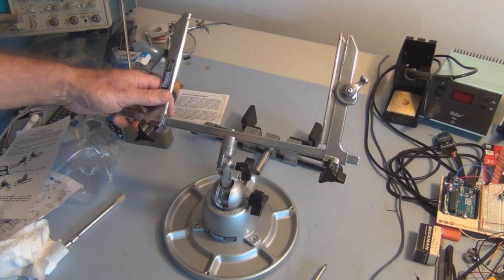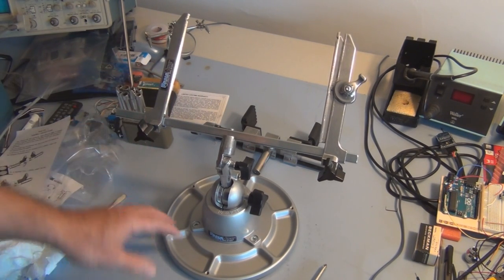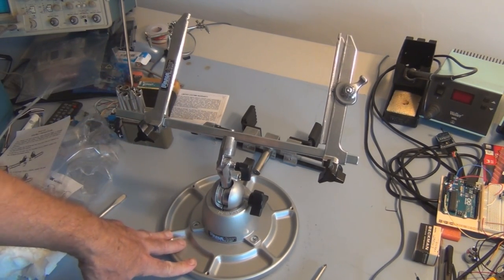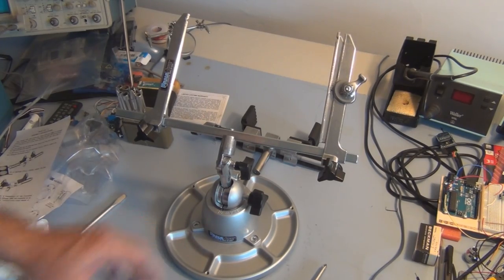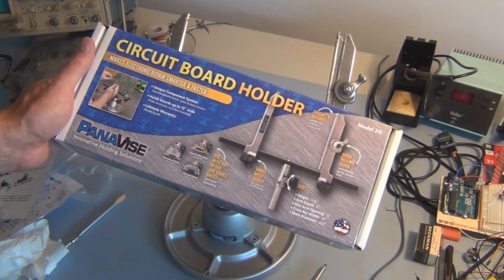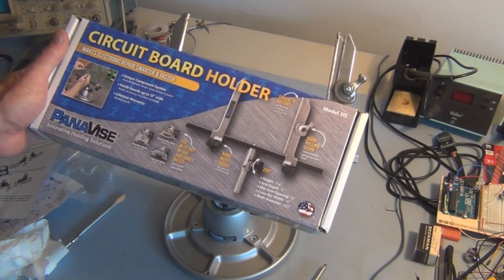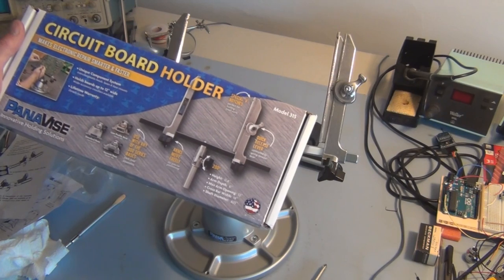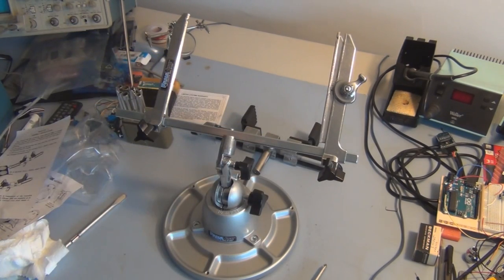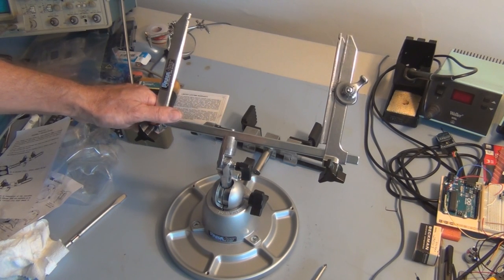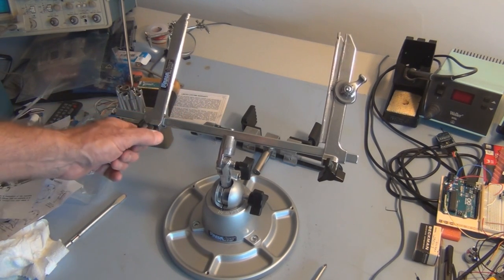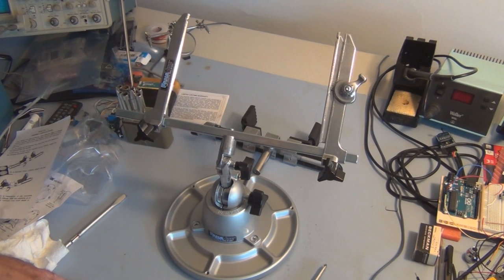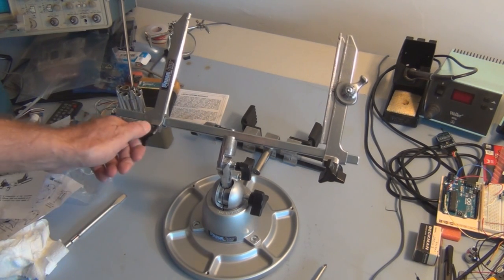Nice. So this is going to come in handy for some future projects. Again, this is the Panavise 350, and I also purchased this circuit board holder that can accommodate boards up to 12 inches wide, and this is model 315. So thanks for watching, please subscribe and or like. See you next video.